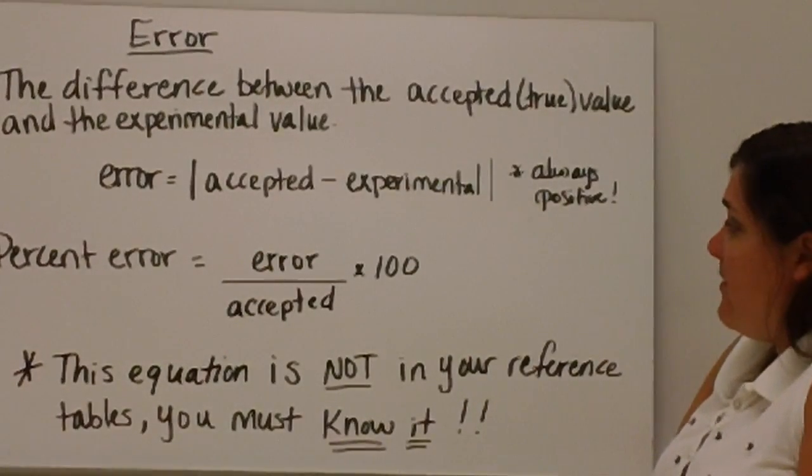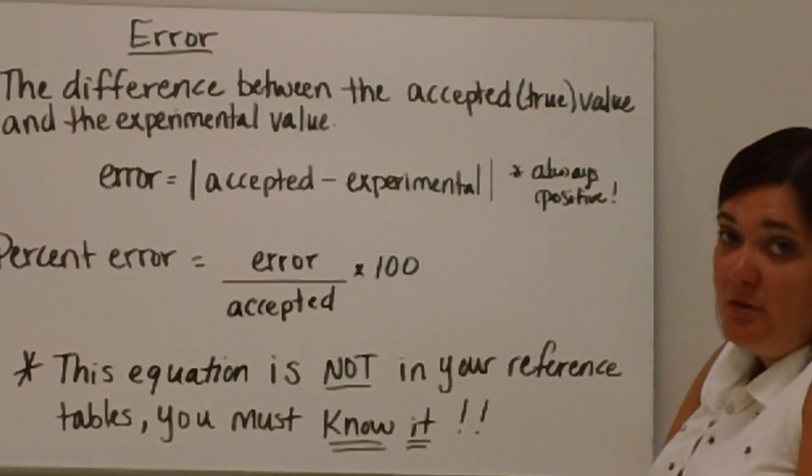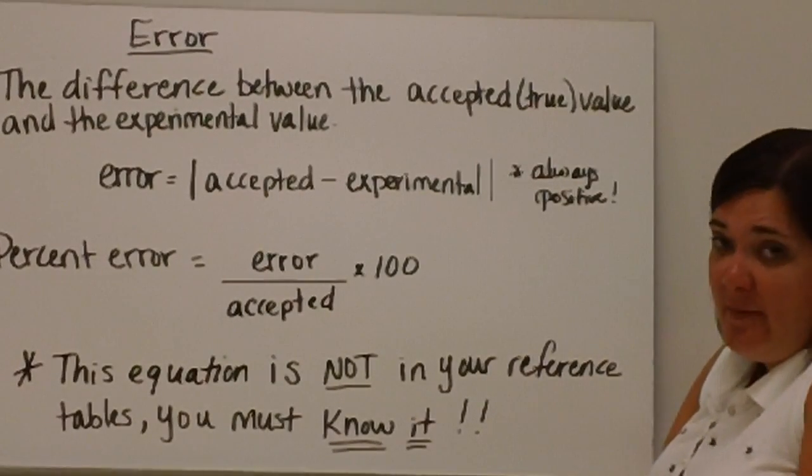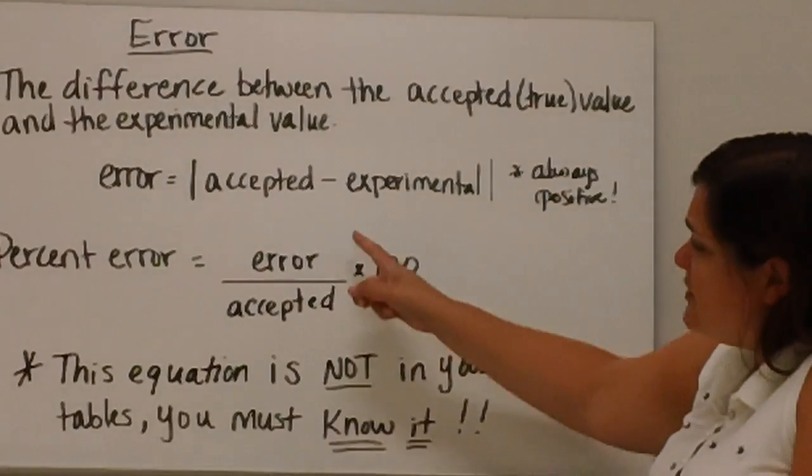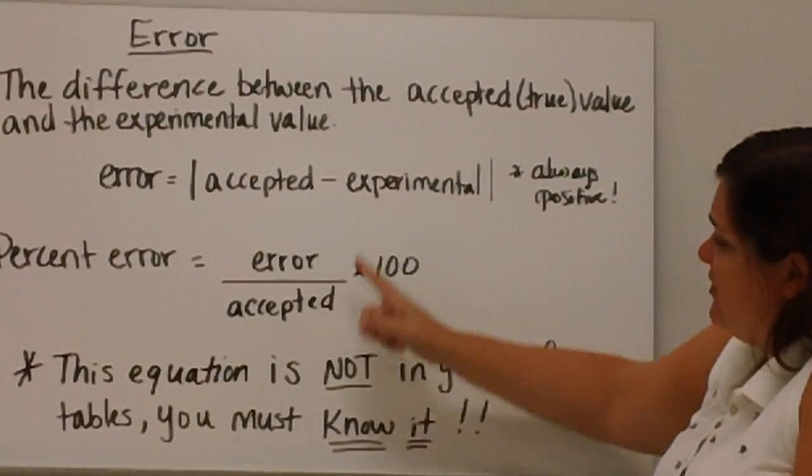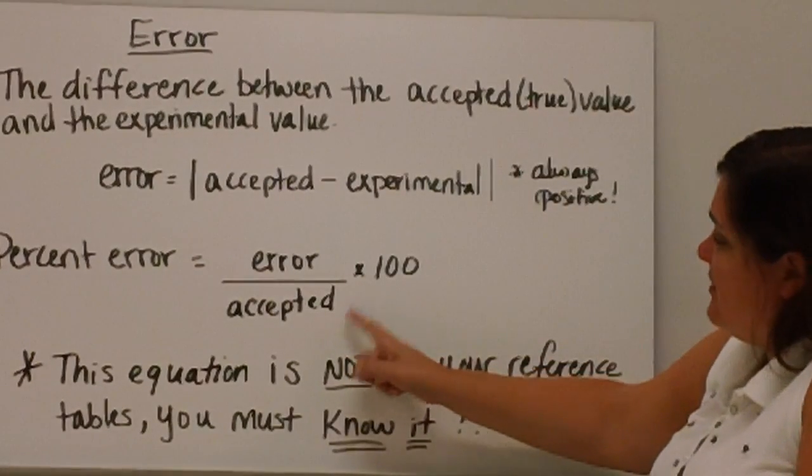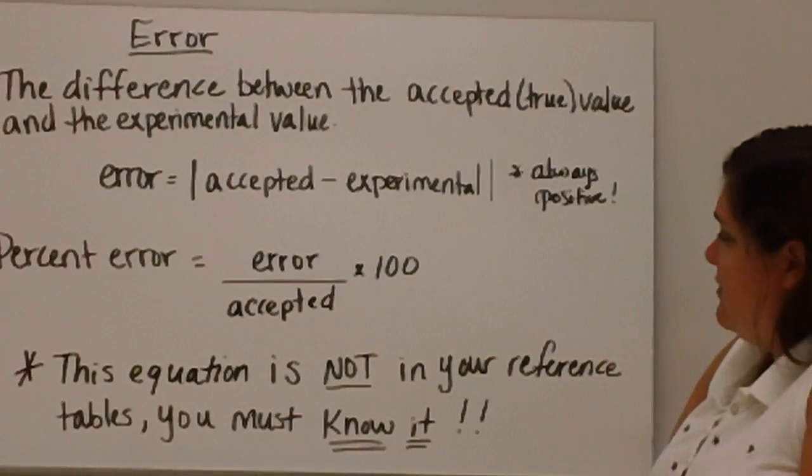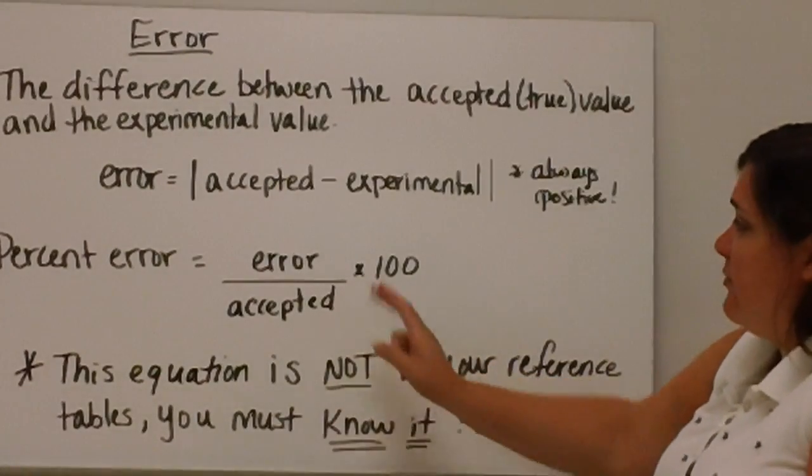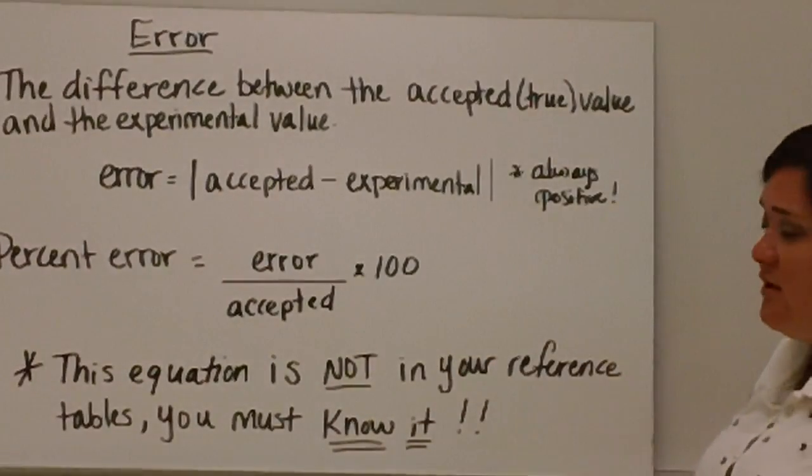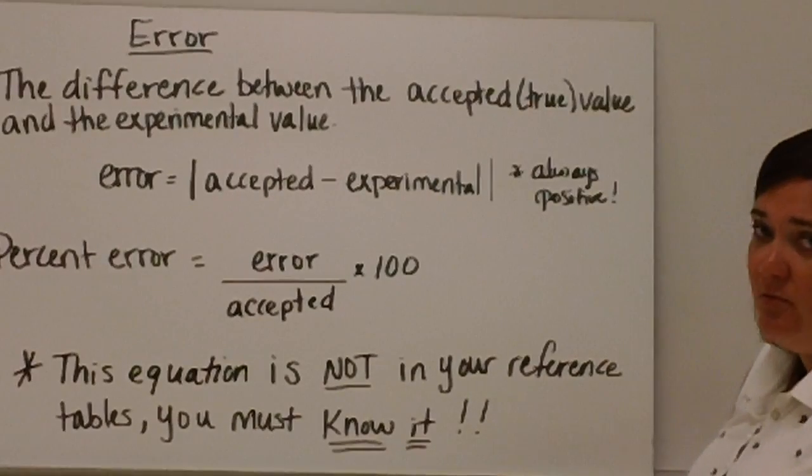And then we can find the percent error, which is what we will mostly find in lab activities. Percent error is your error that you calculated from the difference divided by the accepted times 100. This equation for percent error and error are not in your reference tables, so you must know this equation.